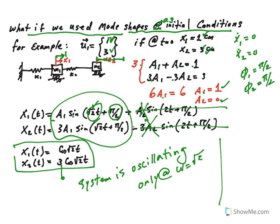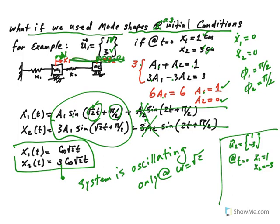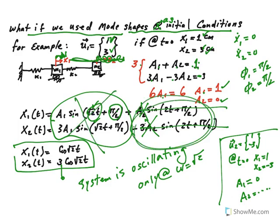By symmetry, if you use the second mode shape (1, −3) as your initial condition — meaning x1 = 1 and x2 = −3 at t = 0 — you can redo the same procedure. You'll find a1 = 0 and a2 equals some non-zero value, meaning the first frequency disappears and the system oscillates only at the second natural frequency. I hope that makes sense. I'll come back with a different method — using Laplace transforms to solve this system of differential equations. Thank you for watching.